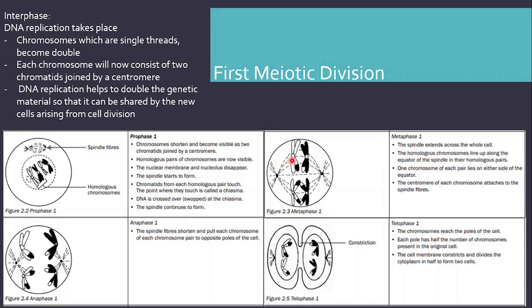In metaphase I, the spindle now extends across the whole cell and homologous chromosomes align at the equator. The way they align at the equator is random, and this also allows for genetic variation. The centromeres of these chromosomes attach to the spindle fibers. In anaphase I, the spindle fibers contract — they shorten and pull the chromosomes to the poles. Once they have reached the poles, the cytoplasm divides in telophase I, which is called cytokinesis — the cell membrane constricts and divides the cytoplasm in half to form two cells.